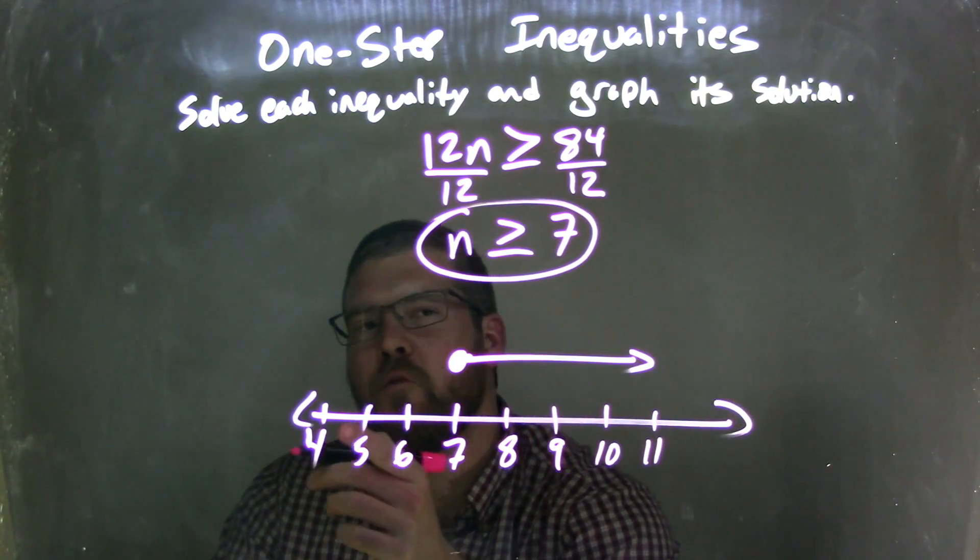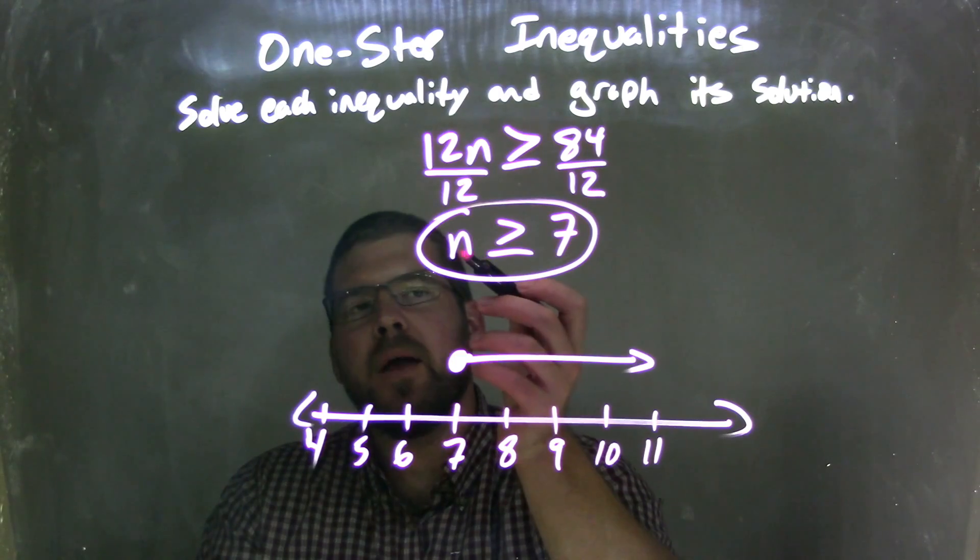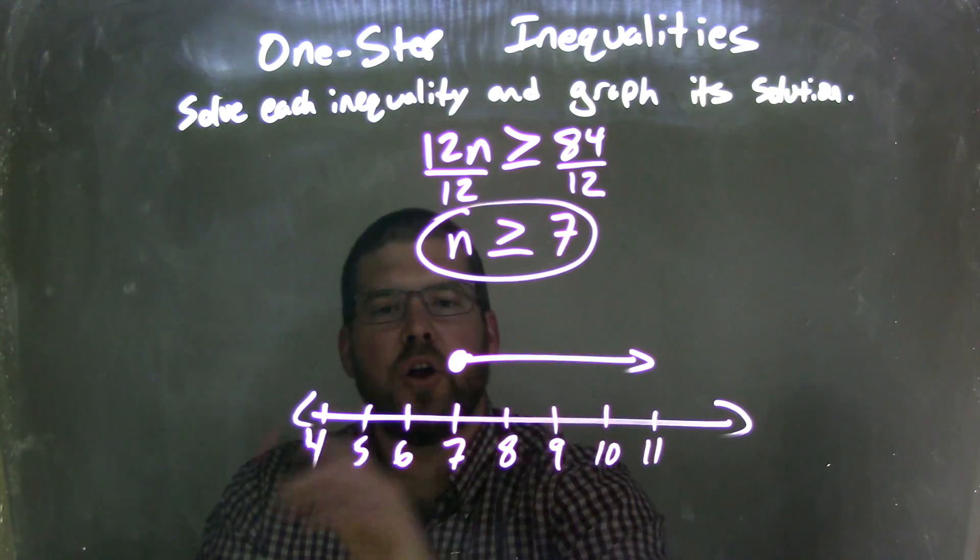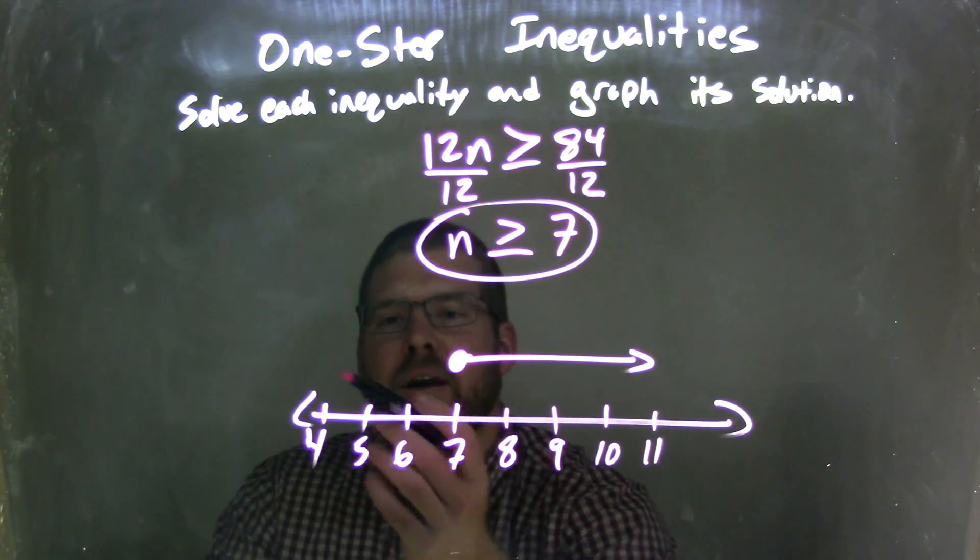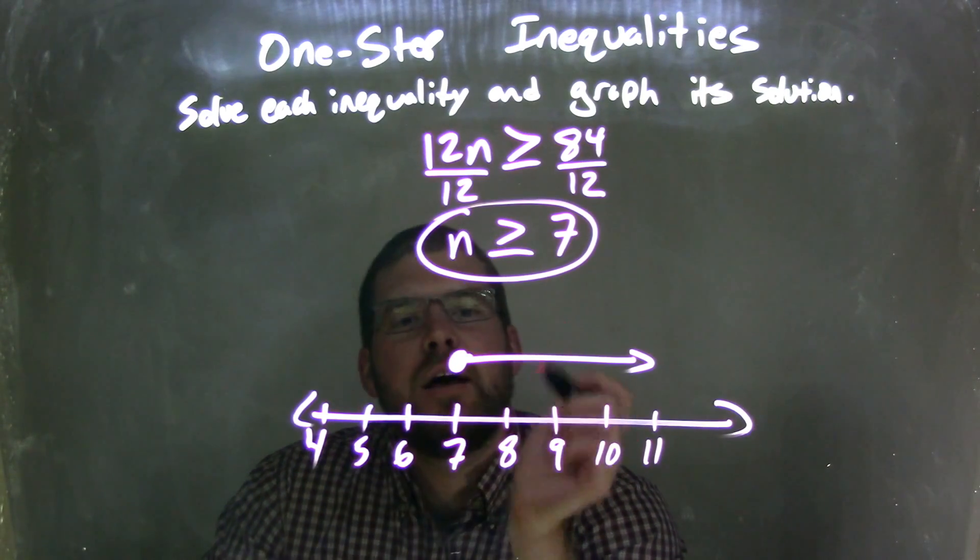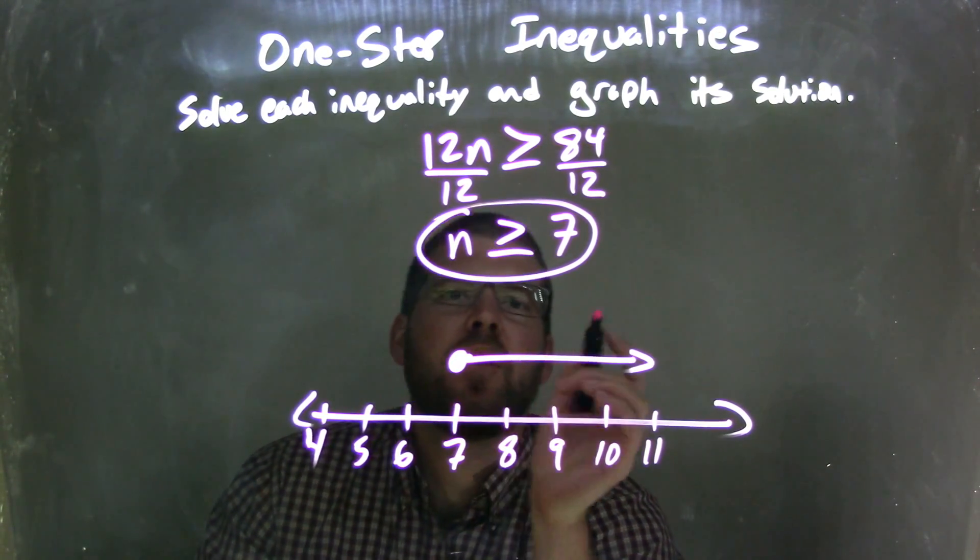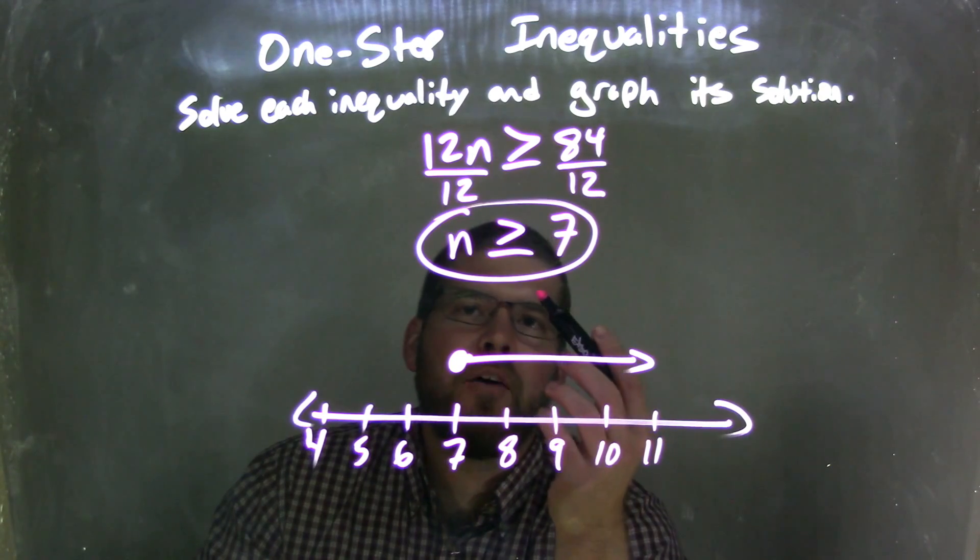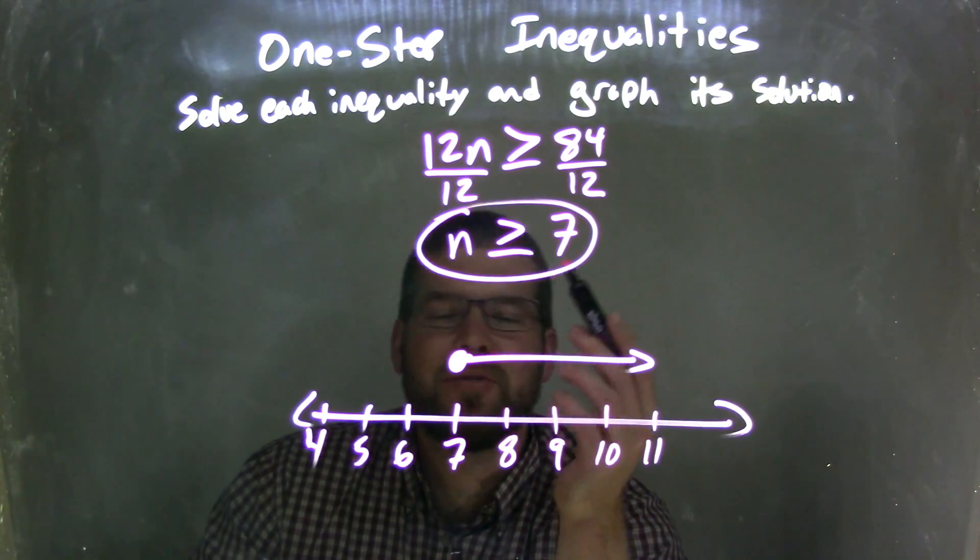But if I put a 4 in for n, 4 right there, is 4 greater than or equal to 7? No. That is not true, and it's not where the shaded region is. And so this graph represents the inequality above, which is n is greater than or equal to 7.